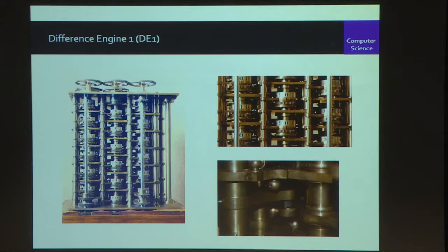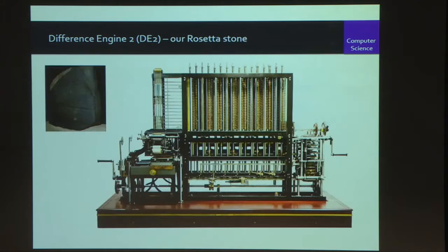Here is Difference Engine number one — Georgian engineering, definitely Georgian engineering, all finished before Victoria came along, rather beautiful, rather baroque and curvaceous in places. This is Difference Engine number two, which is much more in your face. It's a lot bigger — remember, this has got a third as many parts as the earlier engine, but the earlier engine, that's only a fragment, about a seventh of it. This is a much chunkier piece of kit. The section on the end here is the printer, and we're going to talk about that again in a moment.